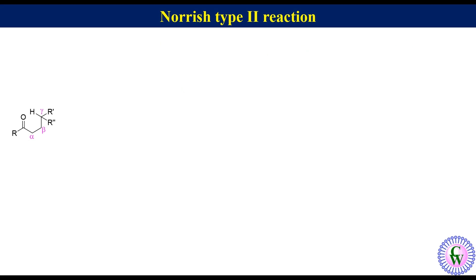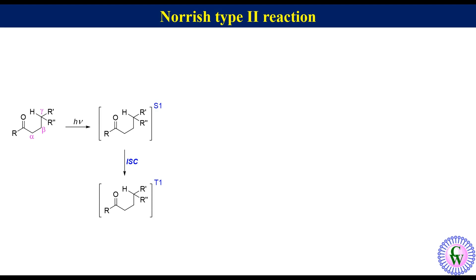When an aldehyde or ketone having gamma hydrogen is irradiated, it goes to the excited singlet state, which after inter-system crossing can go to the excited triplet state. Both excited states can undergo gamma hydrogen abstraction to produce a 1,4-diradical.